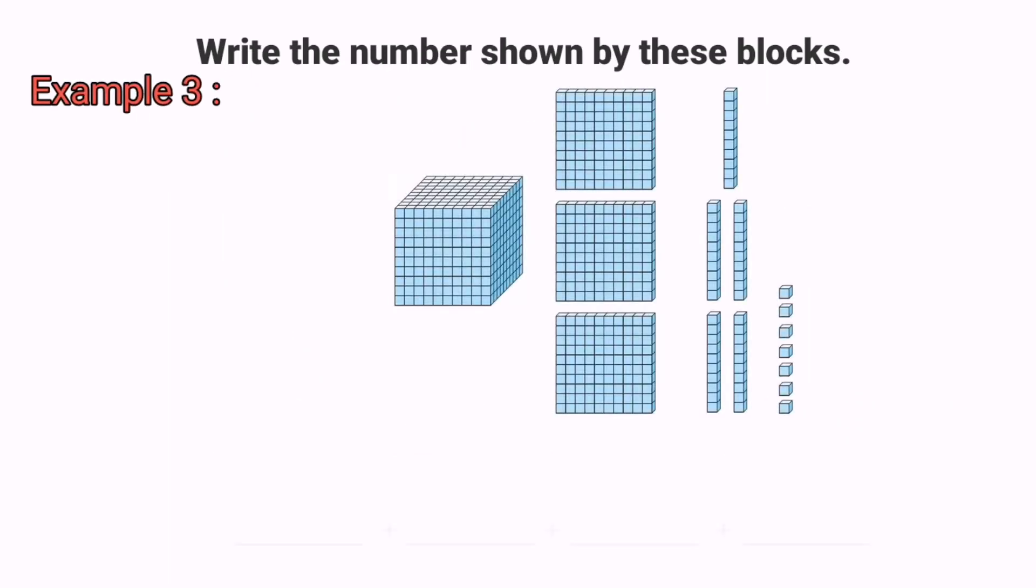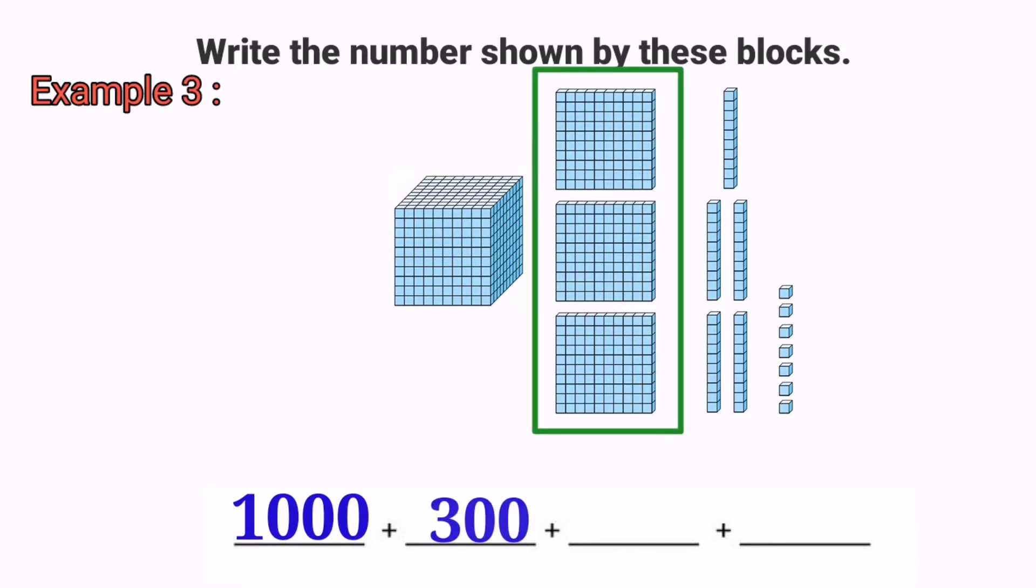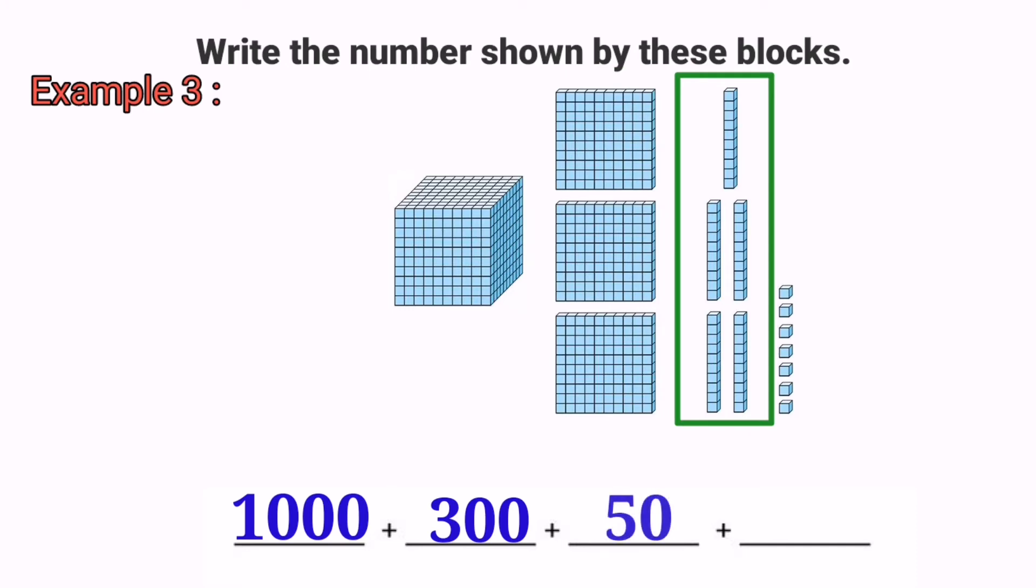We look at our next example. We had one cube which is 1,000, three flats represent 300, five longs is 50, and the last one is we had 7 short blocks. The total value of this block is 1,357.